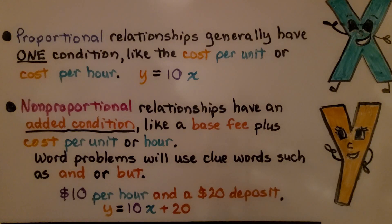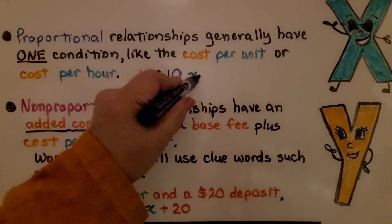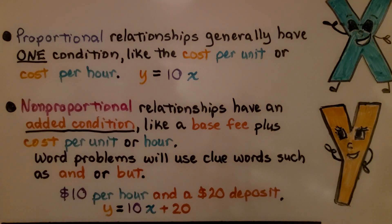Proportional relationships generally have one condition, like the cost per unit or cost per hour, like y = 10x. Non-proportional relationships have an added condition, like a base fee, plus a cost per unit or hour. Word problems will use clue words, such as and or but. We have $10 per hour AND a $20 deposit, so we would have y = 10x + 20.